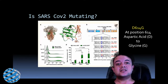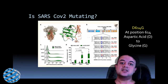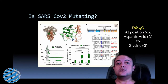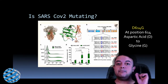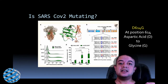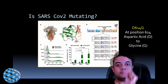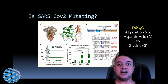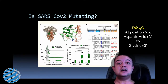SARS-CoV-2, as you know, is the virus responsible for COVID-19 — that is the scientific name of coronavirus. This virus is an RNA virus, so it has an RNA molecule just like our DNA molecule. The mutation is basically a point mutation — one base, one letter of this RNA, is changing to another letter.